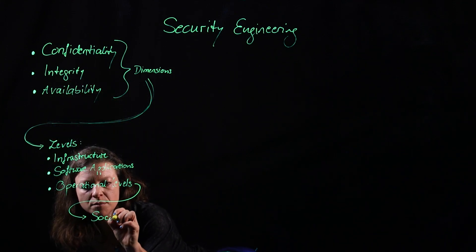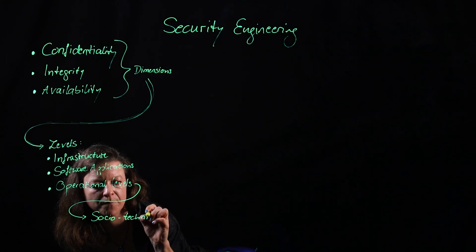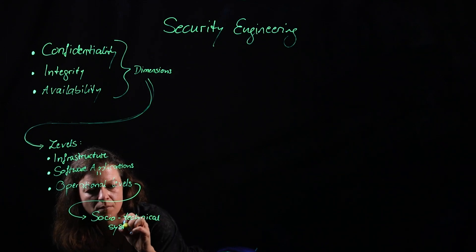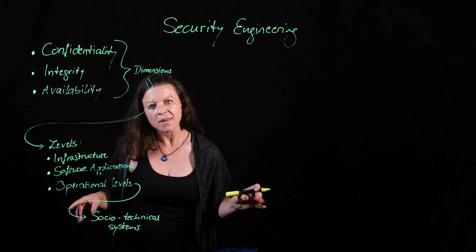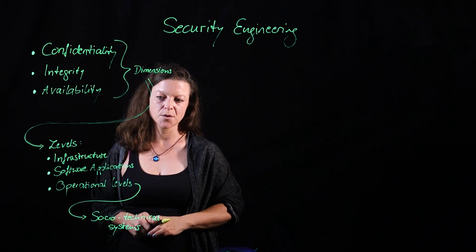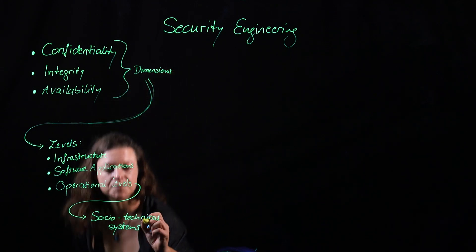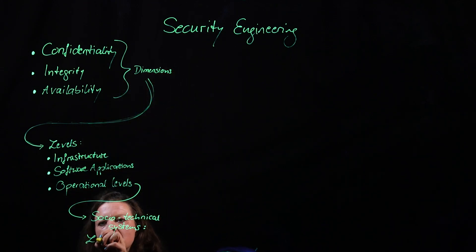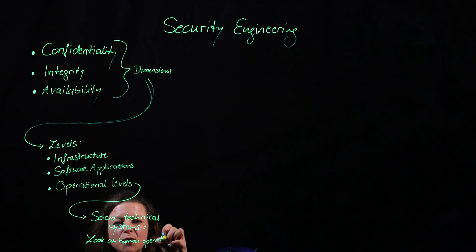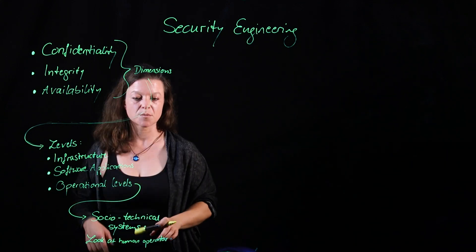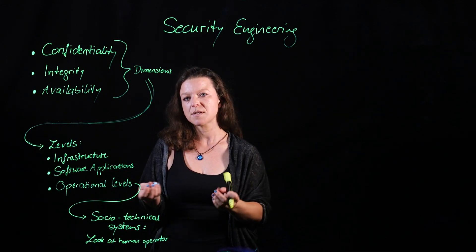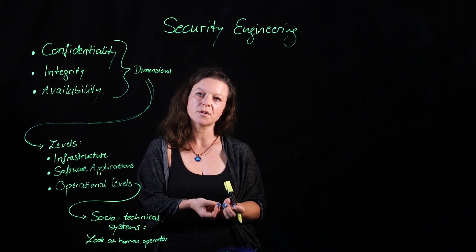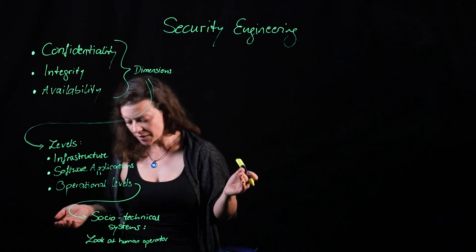In socio-technical systems, we see that the main source of failure could actually be the human operator. For that, we can establish security policies to keep certain boundaries in place, like password policies. But most importantly, we also have to walk people through what could happen if those policies don't get adhered to.